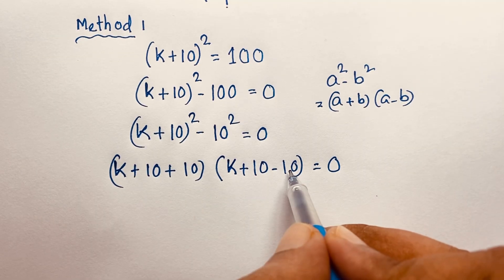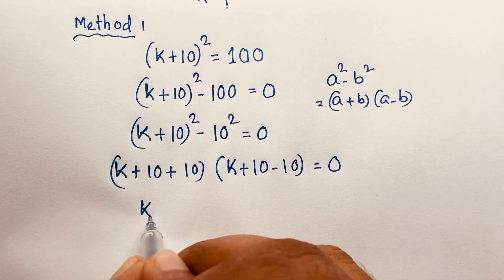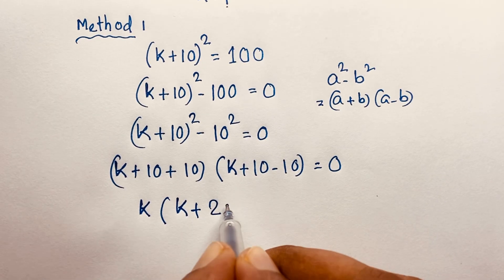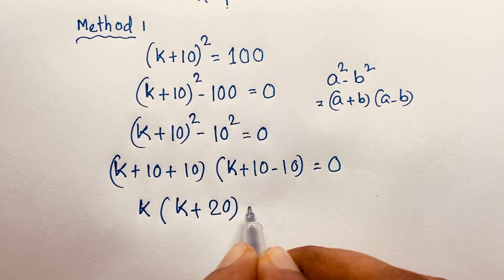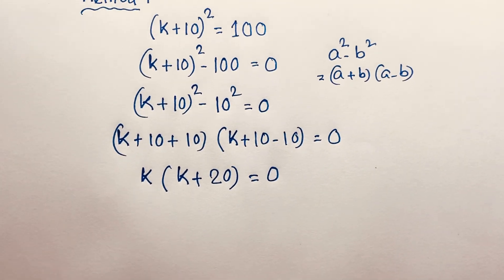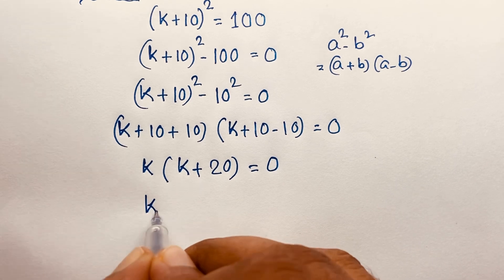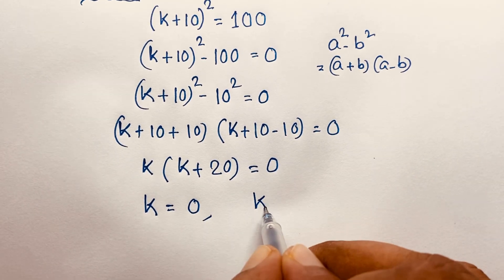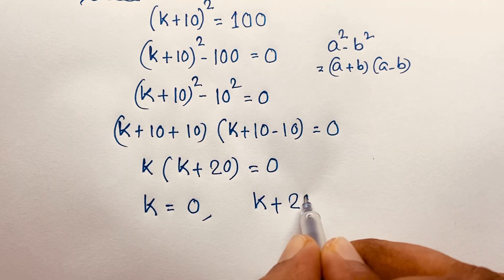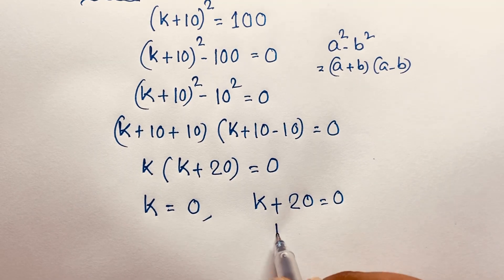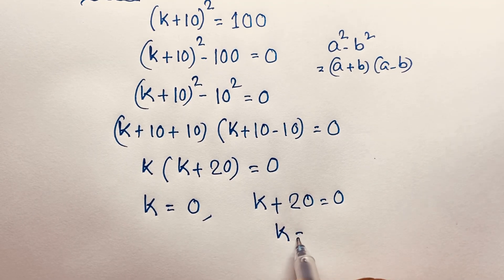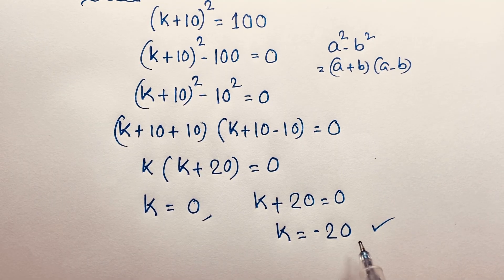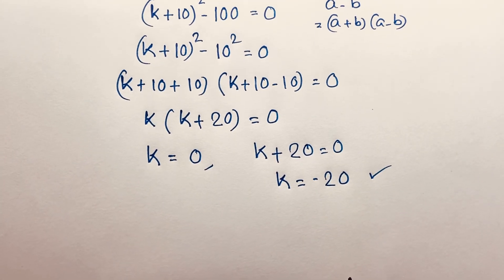You can see the 10s cancel, so it will be k and k + 20 = 0. We find two cases: the first case is k = 0, and the other case is k + 20 = 0, giving k = -20. So our final answer is k = 0 and k = -20.